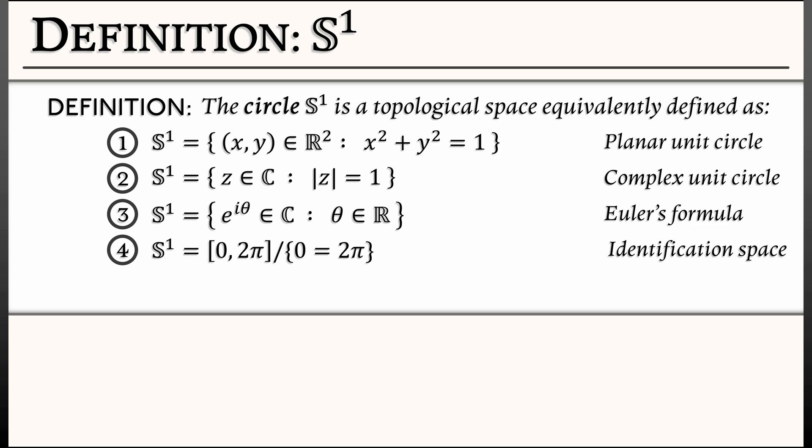This leads to something called an identification space, where I take the interval from 0 to 2π and I glue the two endpoints together to get a circle. And if you really want to get fancy, then the way to do this is to express this as something called a quotient space. The circle is really the reals modulo the integers. We say that two real numbers are equivalent or the same if they differ by an integer. And that quotient space also gives you the circle.